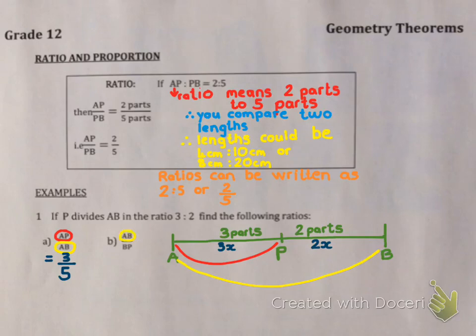The next question says AB, which we've already noticed is 5 parts, to PB, which we know is 2 parts. So this ratio is 5 parts to 2 parts. Again, you could have written 5x over 2x, but the x's would have cancelled. Now both of those are ratios in simplest form, which is how you should always leave ratios.